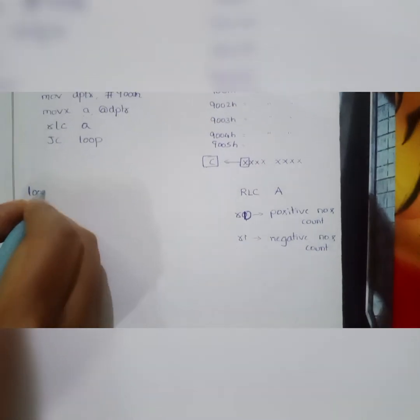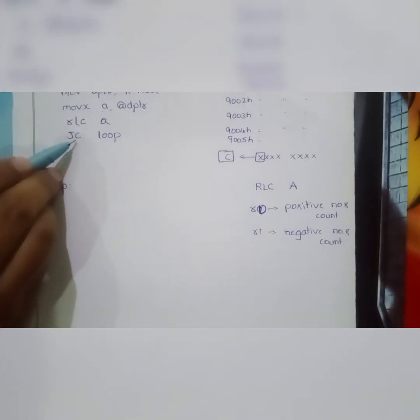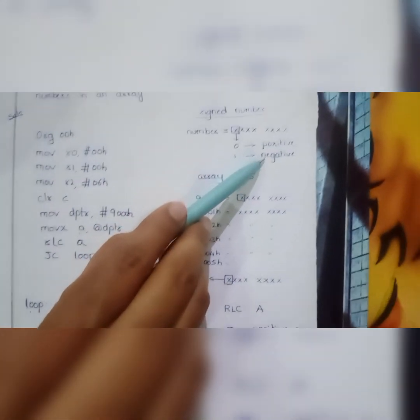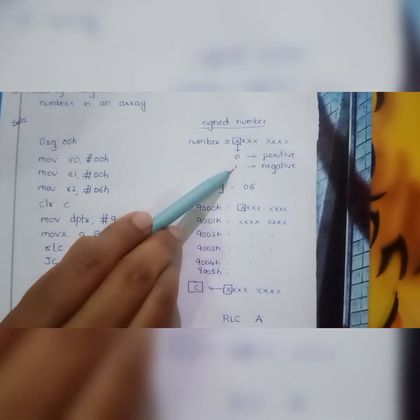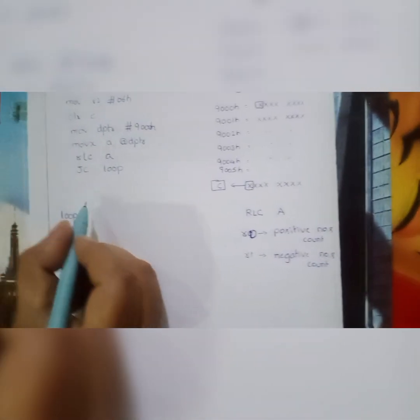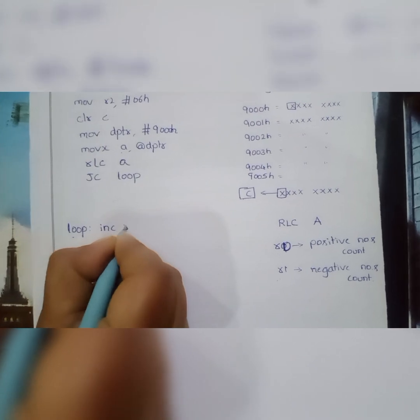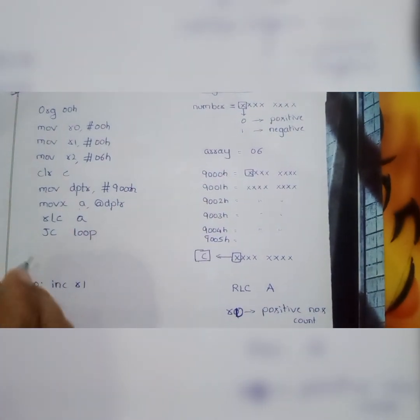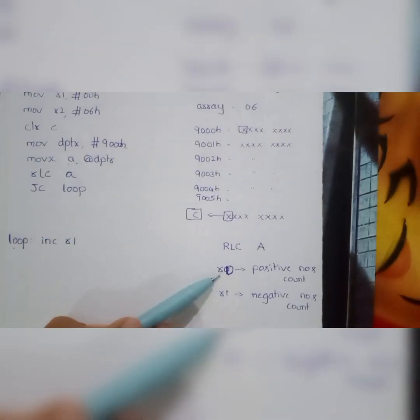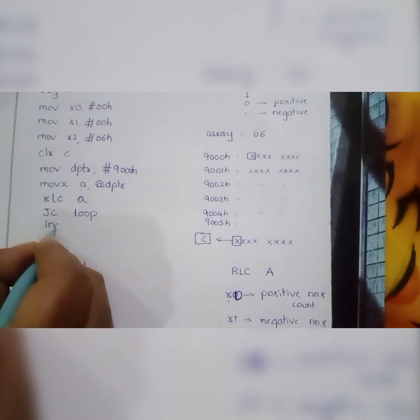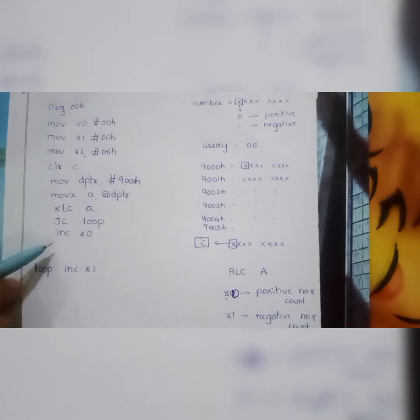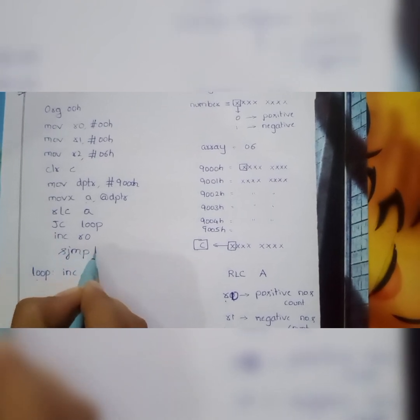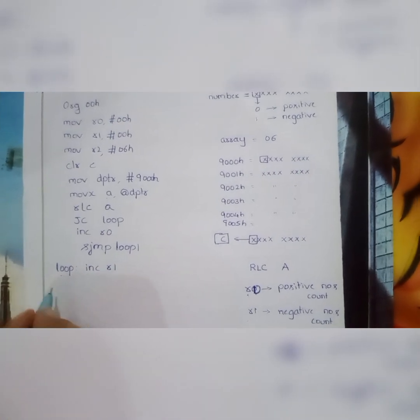If the carry is 1, the number is negative, so we jump to the loop label and execute INC R1 to increment the negative count. If the carry is 0, the number is positive, so we execute INC R0 to increment the positive count. Either INC R0 or INC R1 executes — not both. After INC R0 executes, we skip INC R1 using the SJMP loop1 instruction to avoid executing both.